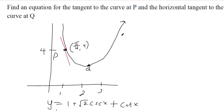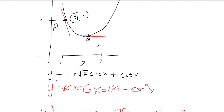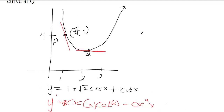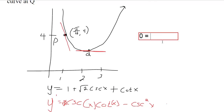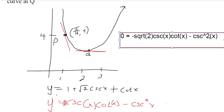The next part asks for the horizontal tangent at Q. If it's going to be horizontally tangent, we don't need to know the point — we can figure it out ourselves, because a horizontal tangent is where the derivative equals zero. So I'm going to plug zero into the left side of this equation. Zero goes in for y prime: that's negative square root of two times cosecant x cotangent x minus cosecant squared x. We've got to solve that equation.